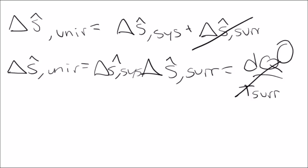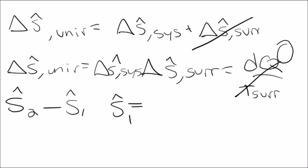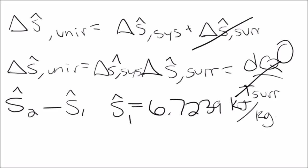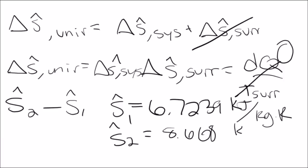To find the entropy change, we take entropy out minus entropy in using the steam tables. S_hat_1 at 8 megapascals and 500 degrees Celsius is found from the superheated steam table: S_hat_1 equals 6.7239 kilojoules per kilogram Kelvin. For the outlet, we don't have the temperature but we have the pressure of 100 kilopascals and the enthalpy h_hat_2. Looking up the superheated steam tables at 100 kilopascals and interpolating around h_hat_2, we get S_hat_2 equals 8.668 kilojoules per kilogram Kelvin.